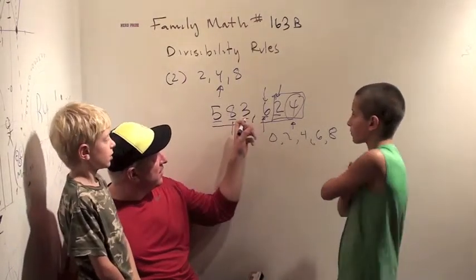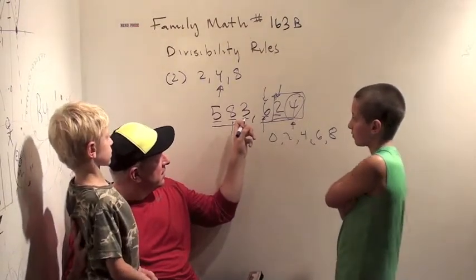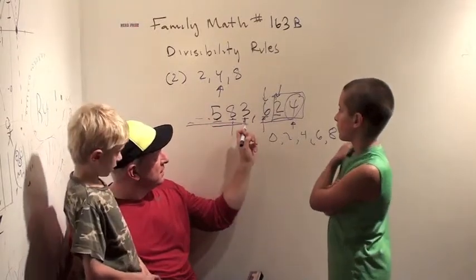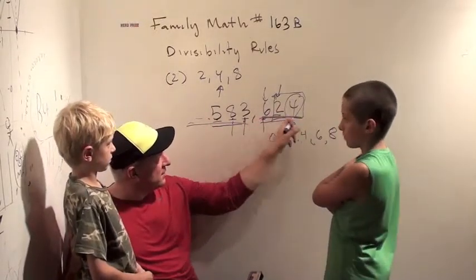So same idea. So see, once we get out above 1,000, the thousands digit, 10,000, 100,000, all the way up, these are all divisible by 8. So we just have to check the last 3 digits.